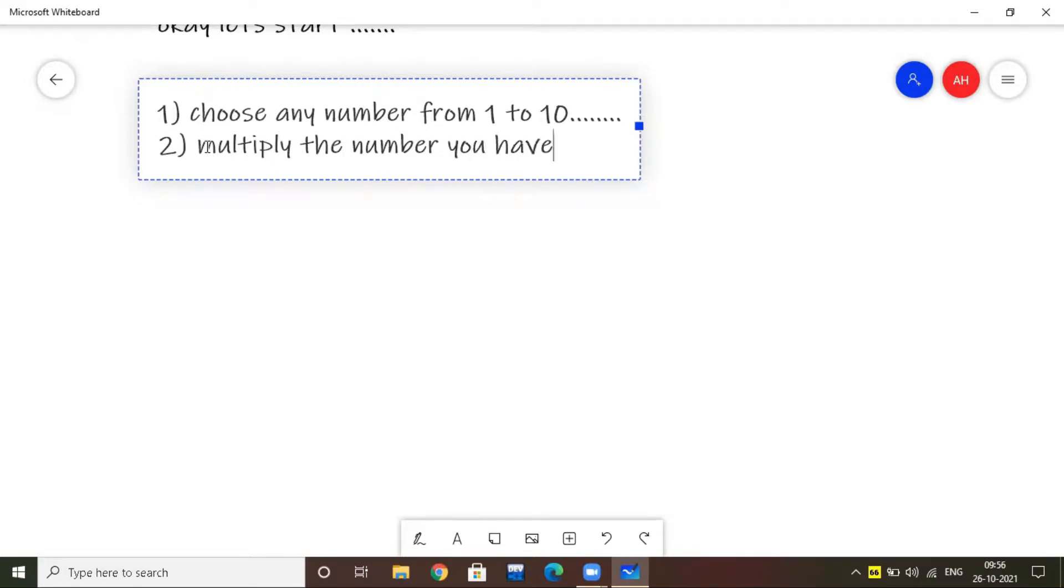Choose any number from 1 to 10. Multiply the number you have chosen by 2. Let's take the example as 6. So 6 into 2 will be 12.